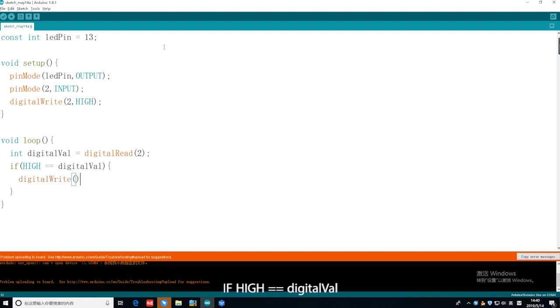If HIGH equals digitalVal, it indicates that the tilt switch lays flat and the LED will go out.